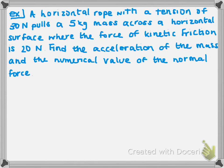Let's try an example. A horizontal rope with a tension of 30 newtons pulls a 5 kilogram mass across a horizontal surface where the force of kinetic friction is 20 newtons. Find the acceleration of the mass and the numerical value of the normal force.